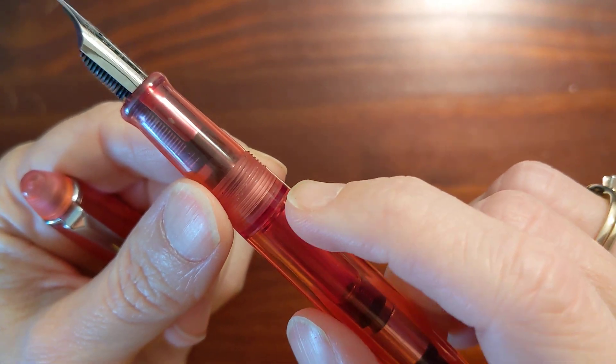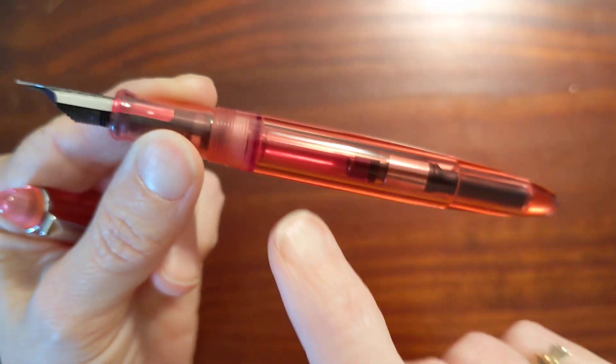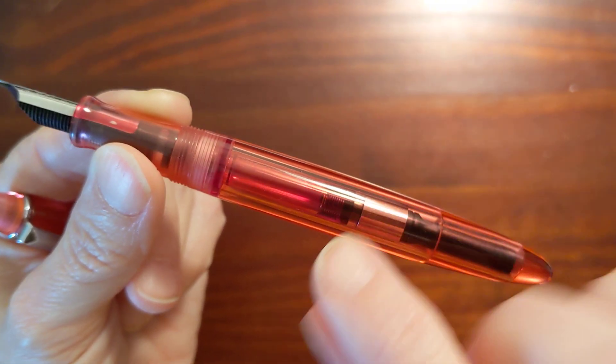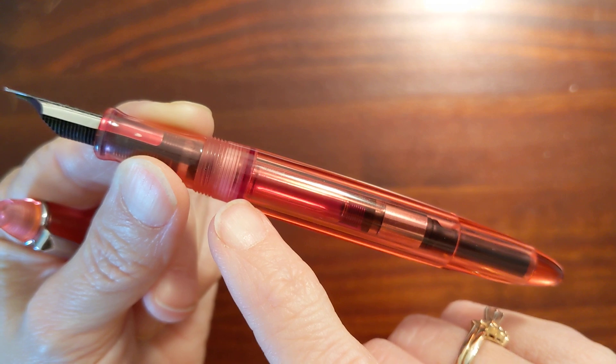There's ink in the threads of where the pen body meets the section and I've got a converter in it. So how did ink get here?